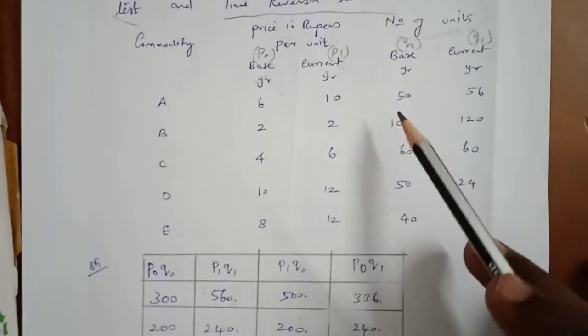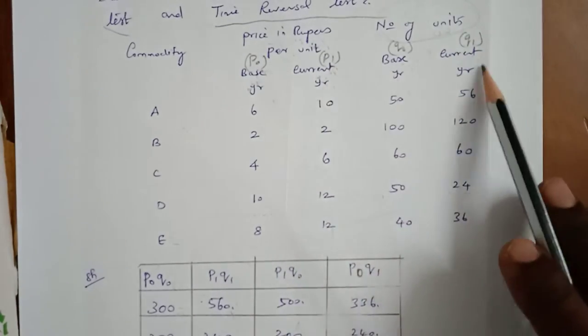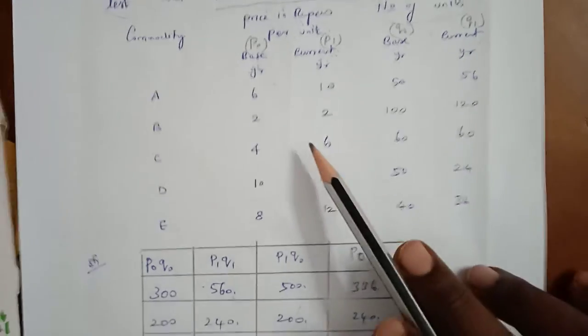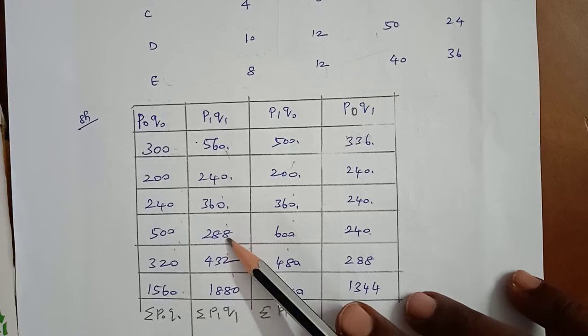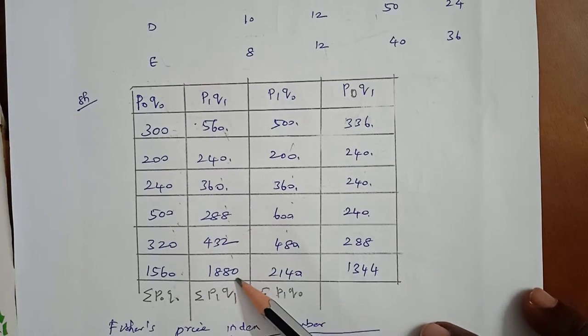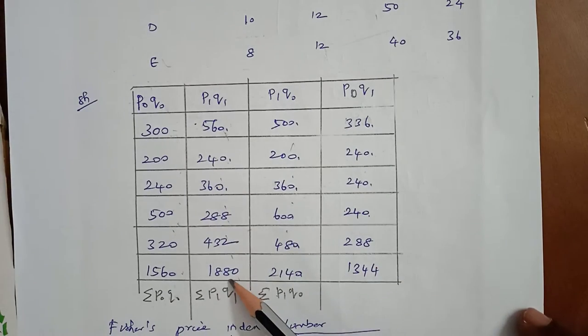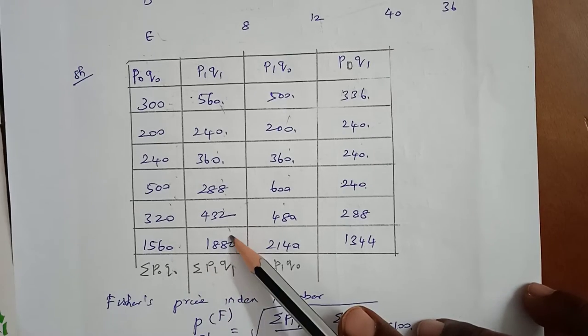Next, multiply P1 into Q1. So 10 × 56 = 560; similarly 240, 360, 288, 432. Adding all values, sigma P1Q1 = 1880.